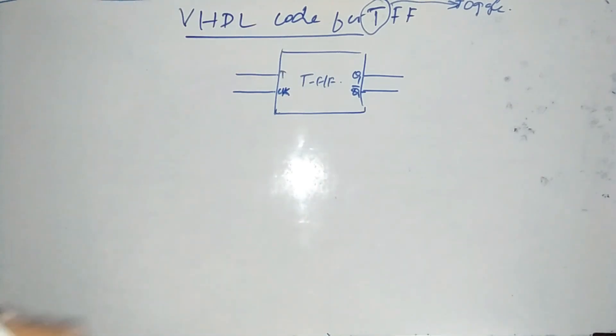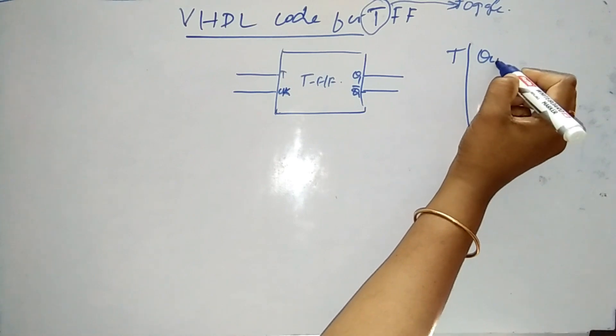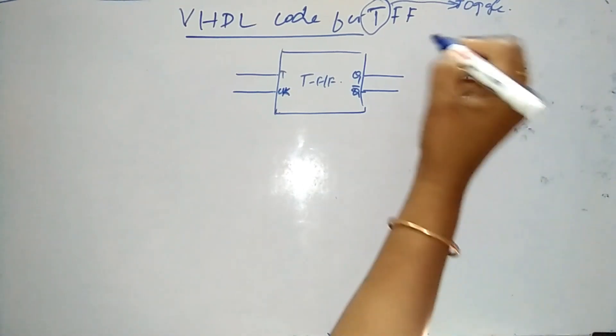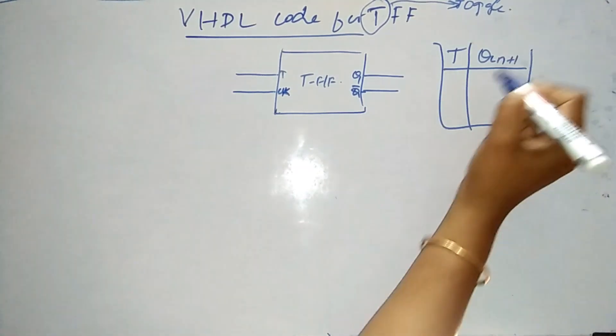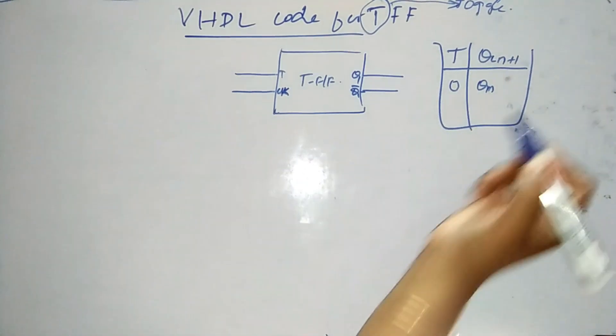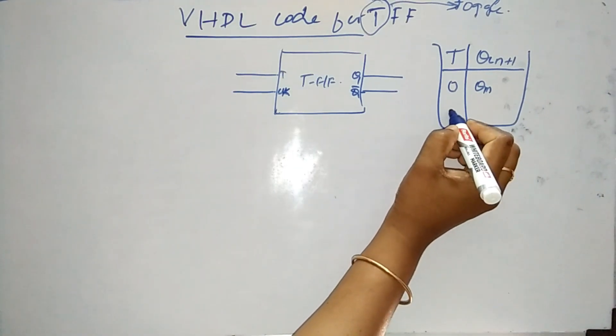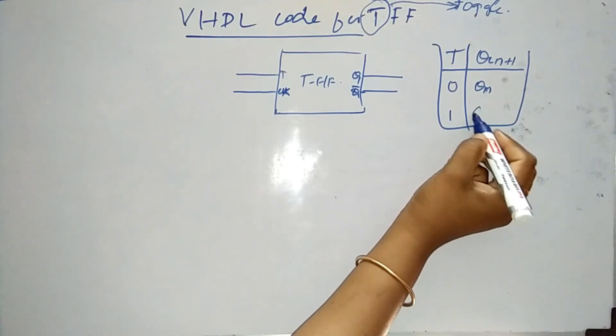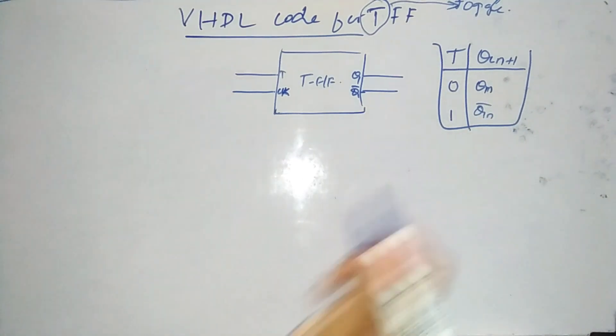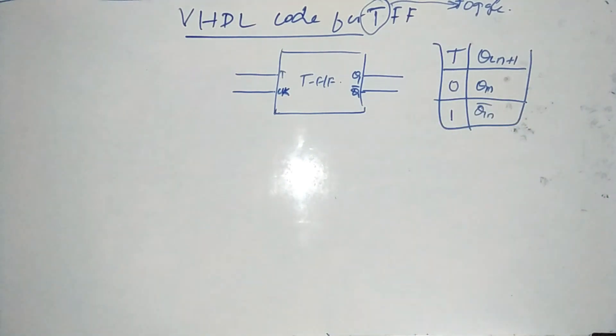This is what is our T-flip-flop and coming to the truth table, we have T and Qn plus 1. So for the input, when T is equal to 0, you get the same input and when T is 1, you get Qn-bar, the complement of the input. So this is what is the basic operation of a toggle-flip-flop.